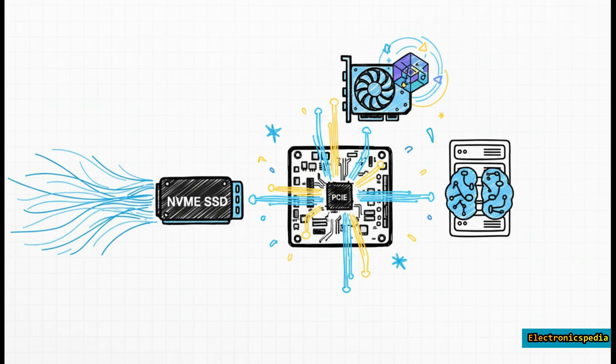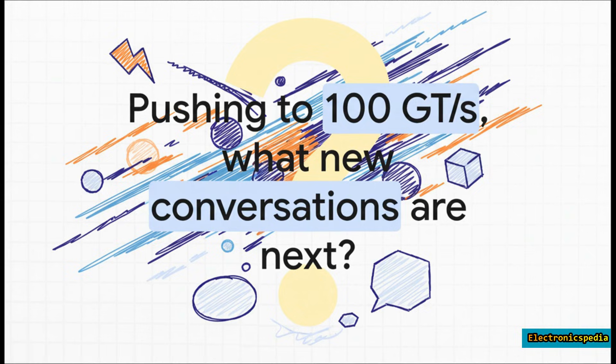This unseen, lightning-fast negotiation is what enables everything. It's what makes your NVMe SSD transfer files in an instant. It's what allows your GPU to power high-end gaming and complex AI calculations. It is the fundamental process that underpins the speed of our entire modern digital world. But it also raises a fascinating question for the future. As we push towards even higher speeds—100 gigatransfers per second and beyond—the physics is only going to get harder. What new, even more sophisticated conversations will our computers need to learn to speak?